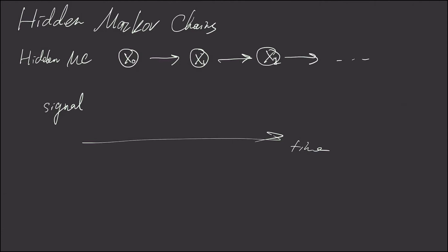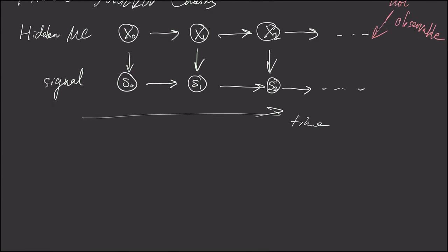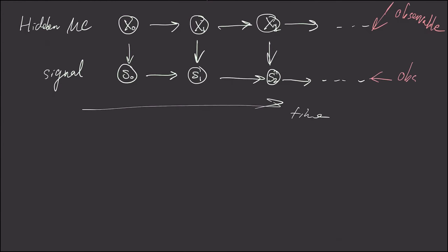Then this is our Markov chain. However, the problem with this is the states of this Markov chain are not observable. But the good thing is at every time step, we're able to observe a signal based on the state of this hidden Markov chain. And this is observable.